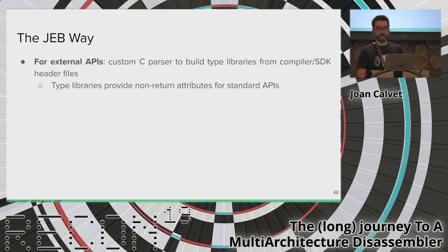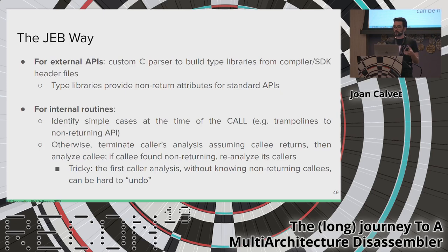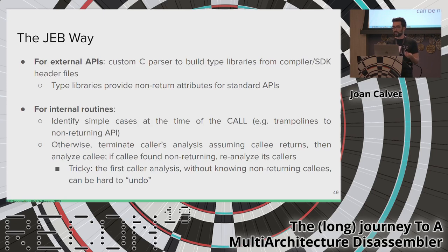We could stop analyzing the caller and analyze the callee first, but maintaining caller state could be tricky and there may be state explosion with chains of calls. More importantly, often we don't even know where the callee is. In JEB, we handle external APIs by parsing compiler SDK header files to build type libraries with full prototypes including the non-returning attribute. For internal routines, we first try to identify simple cases at call time — checking if the callee is a trampoline to a non-returning API. Later, if we find a callee is non-returning, we reanalyze all its callers.